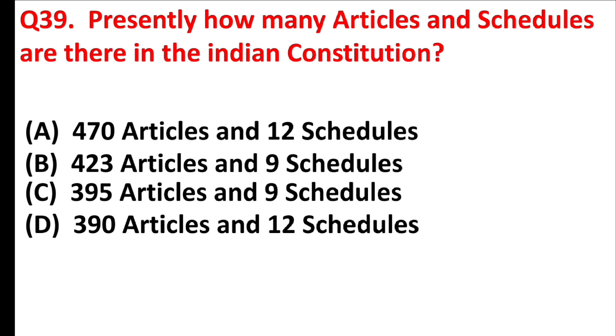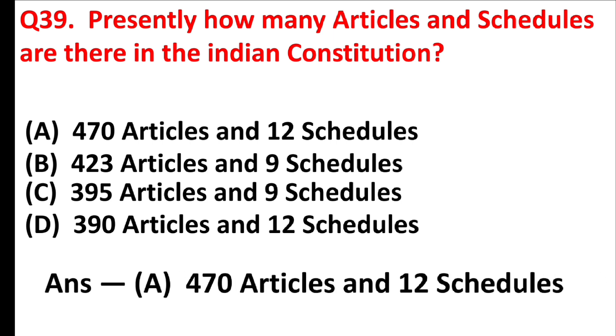Presently, how many articles and schedules are there in the Indian Constitution? Answer is Option A: 470 articles and 12 schedules.